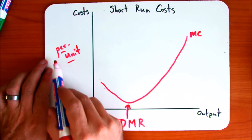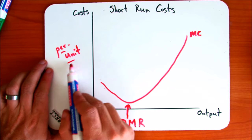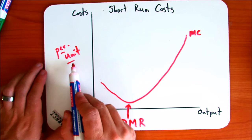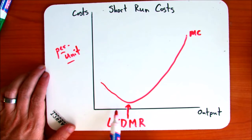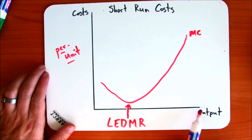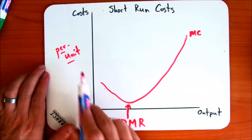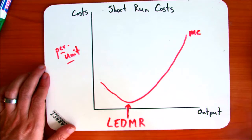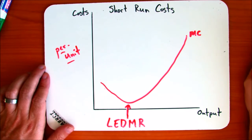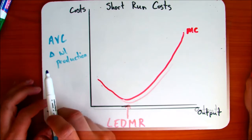Remember that these are a per-unit cost, so it's saying that as I produce 1, 2, 3 — as I increase output by 1 — per-unit costs go down and then up after the point of diminishing marginal returns.